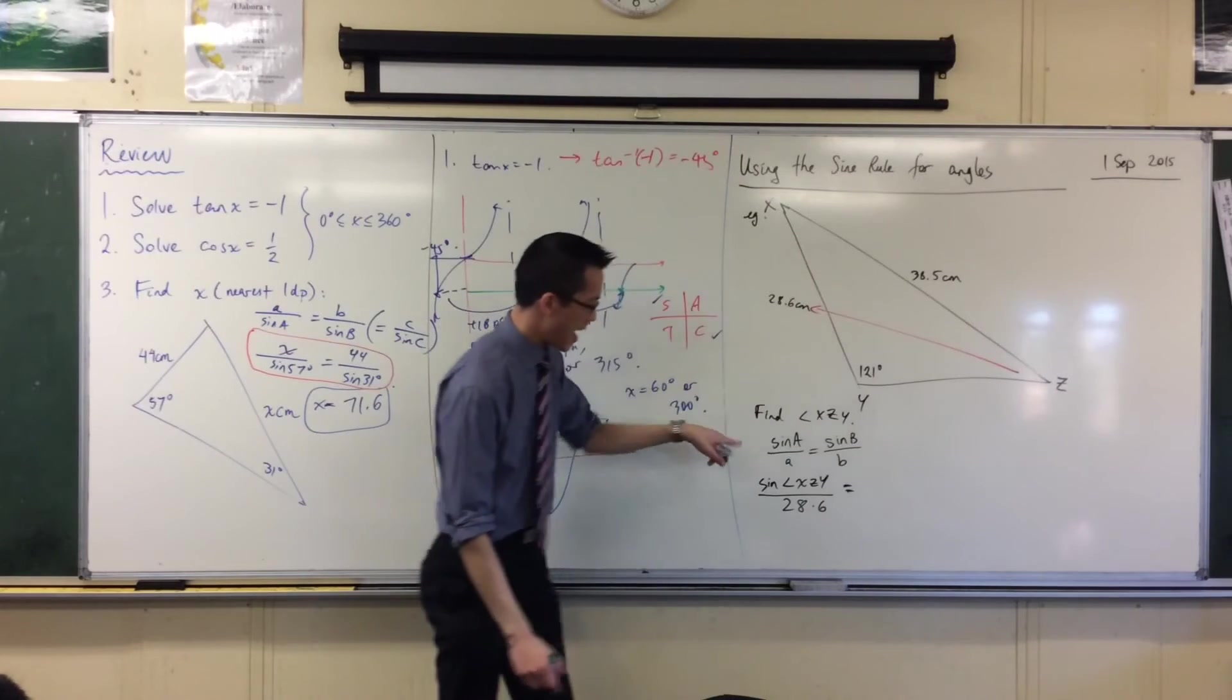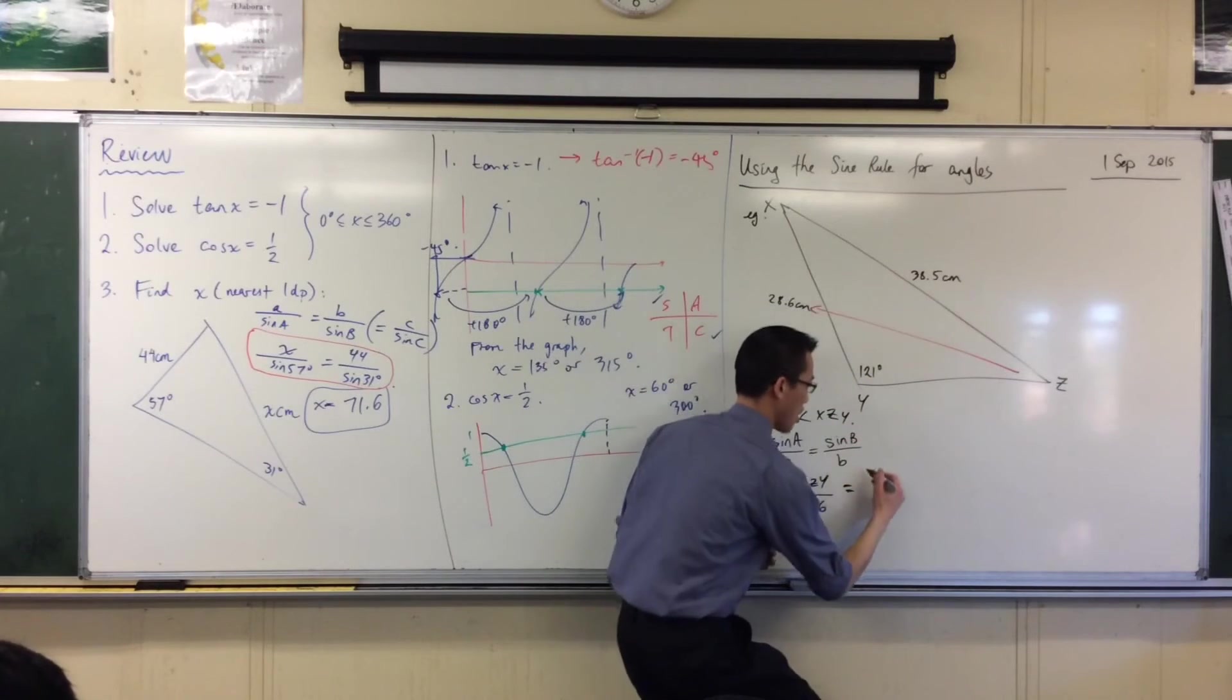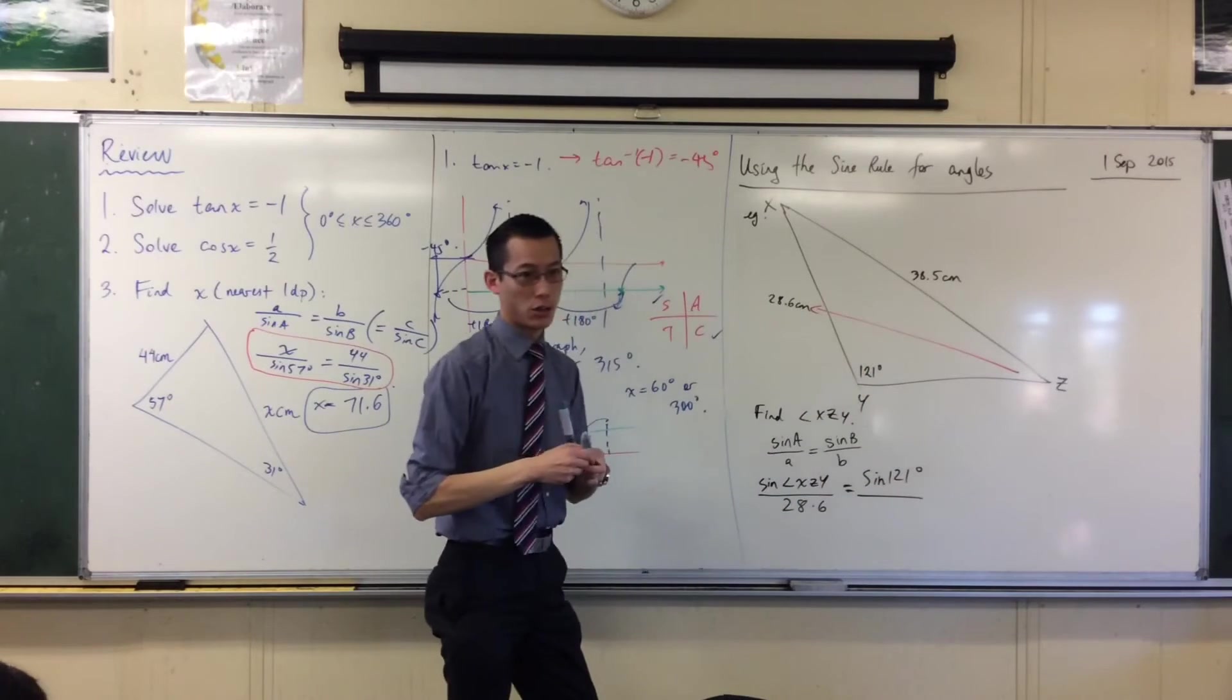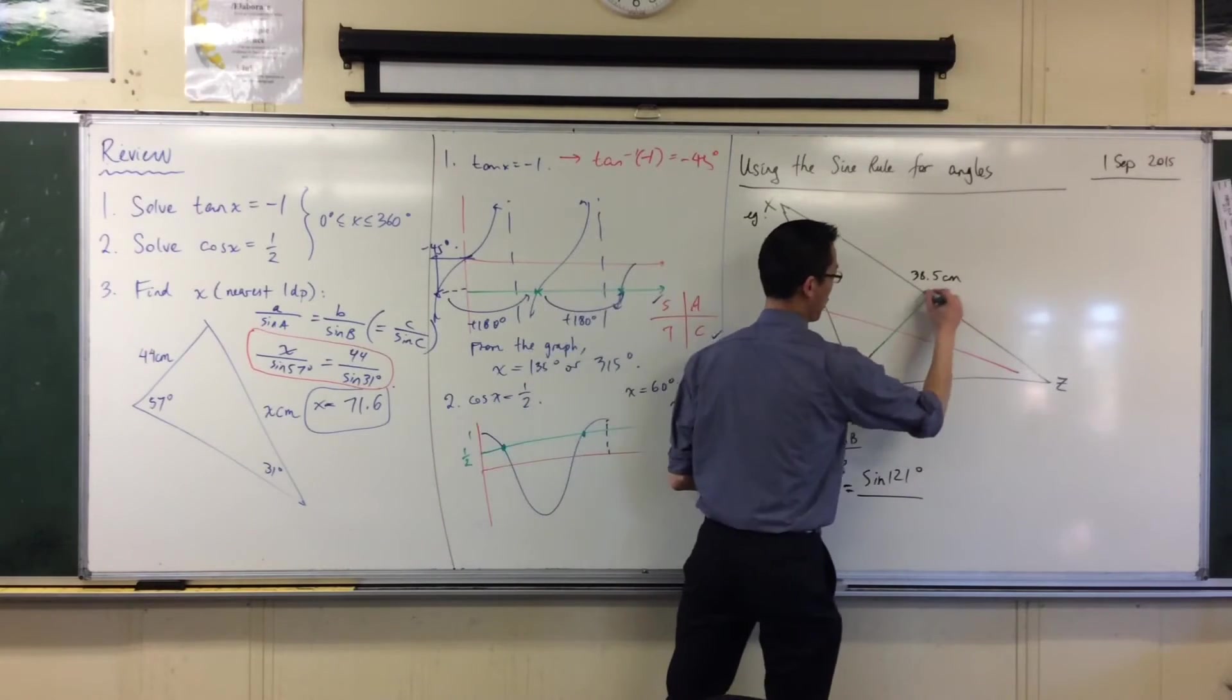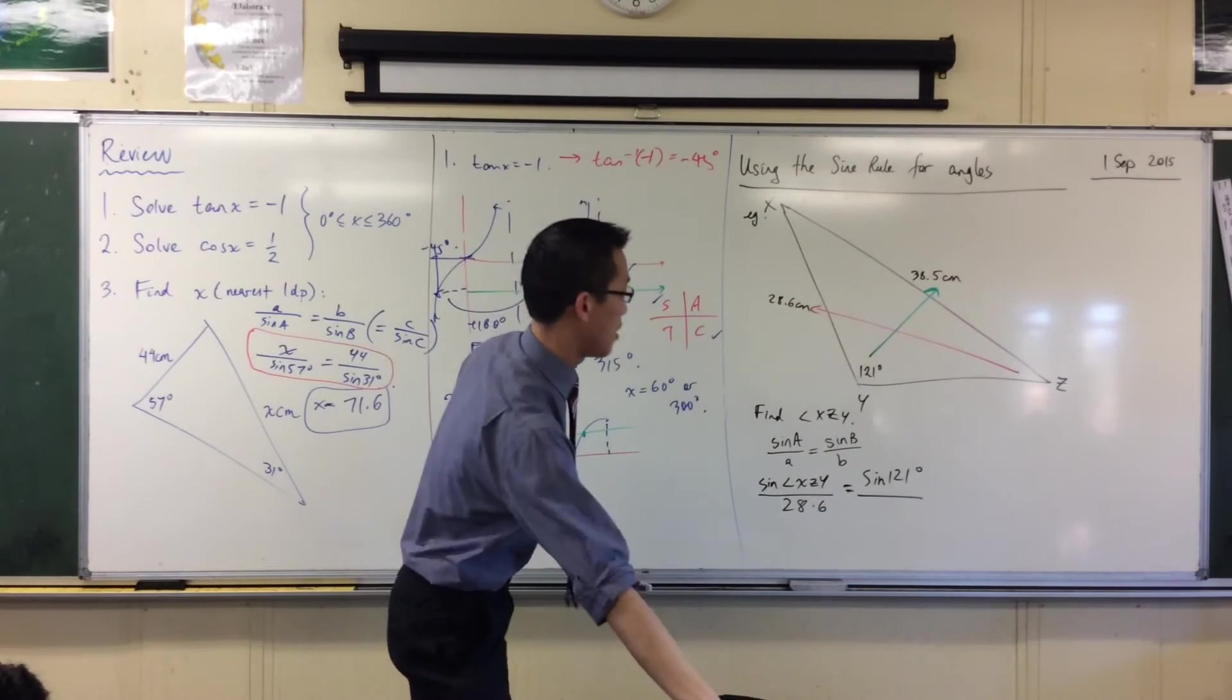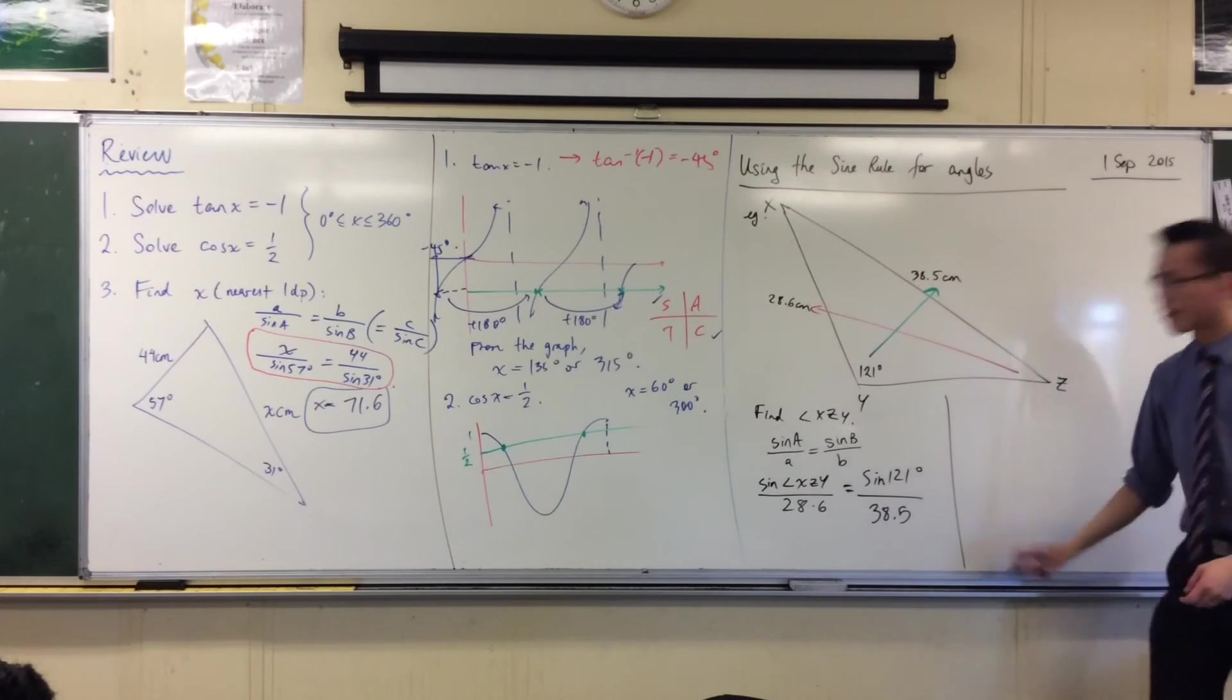I've got my angle on the top, so here's my other angle, 121, sine 121, divided by, and I look at, conveniently, the only thing left, which is the opposite side. Right? So that's 38.5.